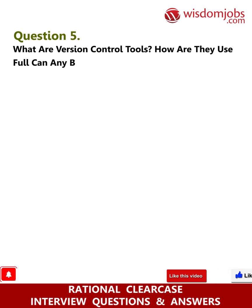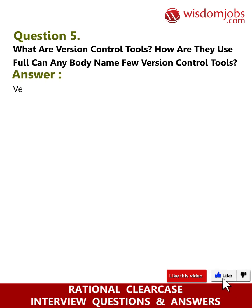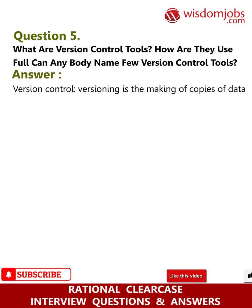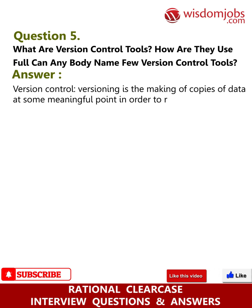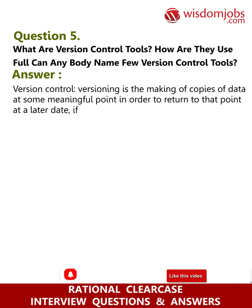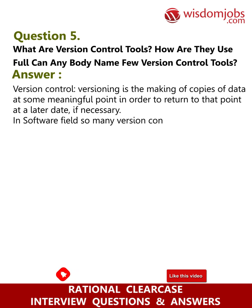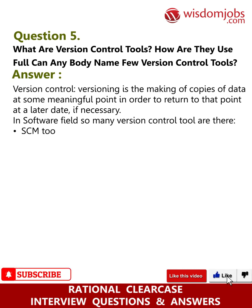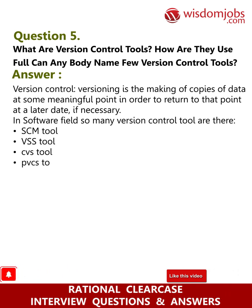Question 5: What are version control tools? How are they useful? Can anyone name a few version control tools? Answer: Version control, or versioning, is the making of copies of data at some meaningful point in order to return to that point at a later date if necessary. In the software field, there are many version control tools: SCM tool, VSS tool, CVS tool, PVCS tool, and Rational ClearCase.